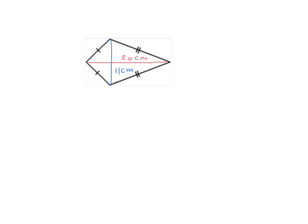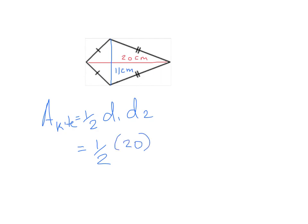Here we have a kite with both of its diagonals. The area of a kite is half times diagonal one times diagonal two. For this particular kite, diagonal one is 20 and diagonal two is 11 — it doesn't matter which diagonal you call diagonal one or diagonal two. When we work that out, we get 110 centimeters squared. So that's the area of this kite, and that's how you do it.